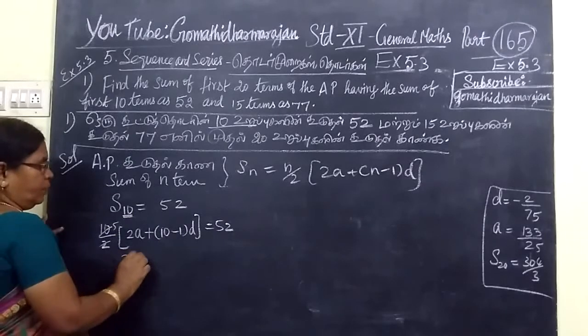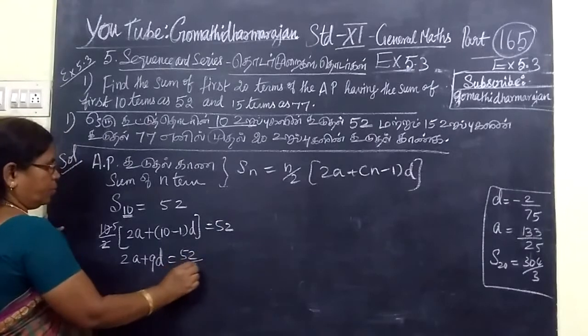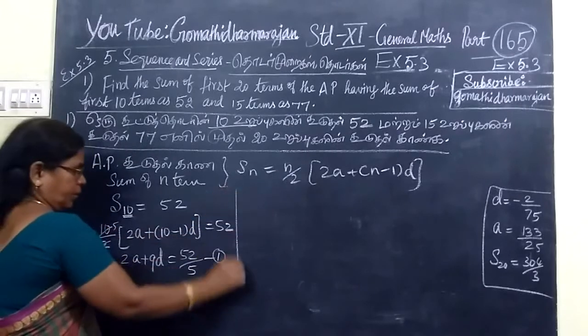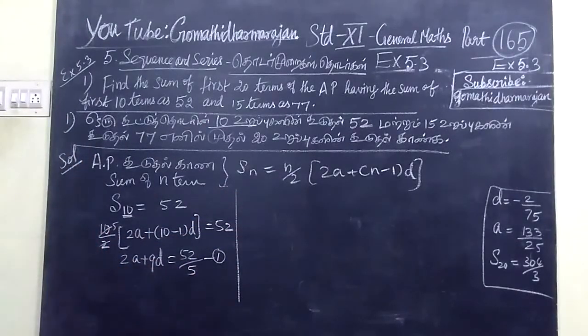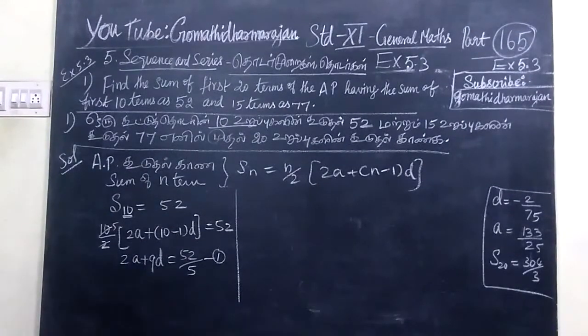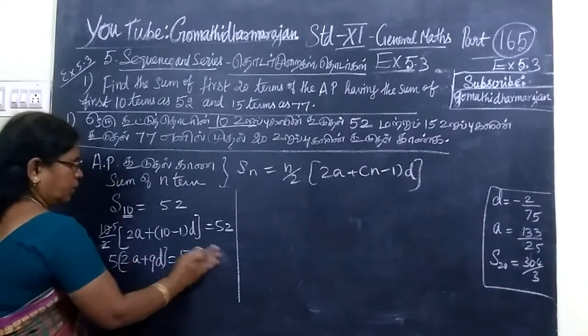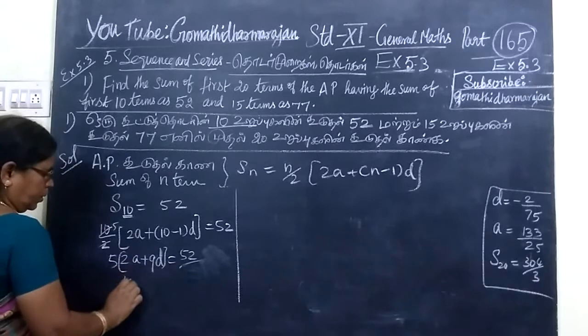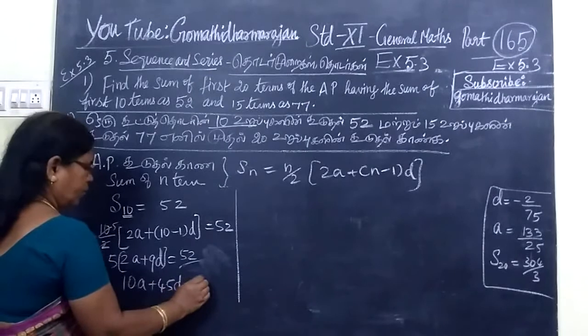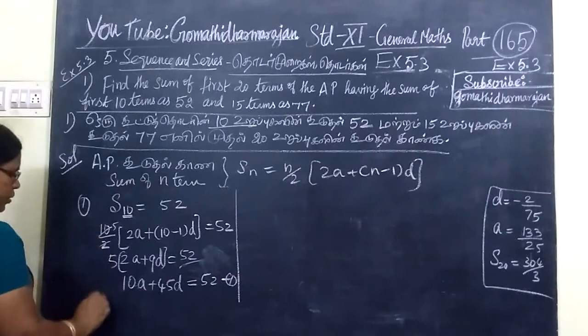So, 2A plus 9D equal to 52 by 5. Then, after that, this is equation 1.